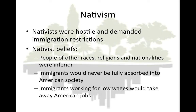As the flood of immigrants grew, hostility to immigration also mounted. Nativists — those born or native to the United States — wanted to restrict immigration. Nativists believed that people of other races, religions, and nationalities were inferior, and that the new immigrants were especially inferior to white, Anglo-Saxon, Protestant Americans. Nativists feared the new immigrants could never be fully absorbed into American society since they lived in ghettos and spoke their own languages. Finally, nativists argued that immigrants working for low wages would take away jobs from other Americans.